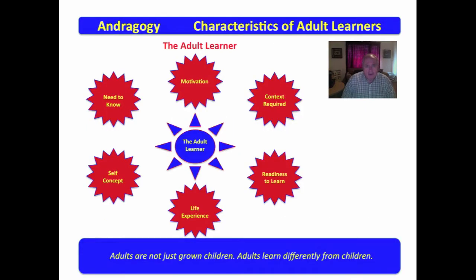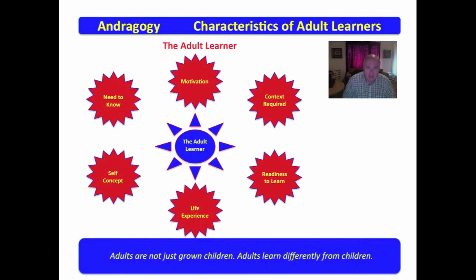We're going a little bit more in-depth into the adult learner's specific characteristics compared to what we did in the previous video. You may recall this diagram where you have the adult learner and these issues: need to know, self-concept, life experience, readiness to learn, context required, and motivation. We're going to take each of these six characteristics and discuss it in a little greater detail.